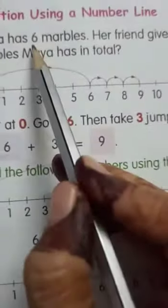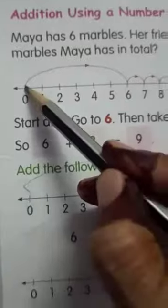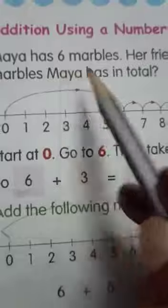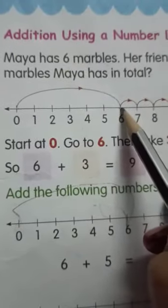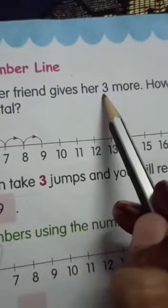Maya was having 6 marbles with her. So, take a jump from 0 to directly to 6. Why? Because Maya was having 6 marbles with her. Next, how many marbles her friend has given? 3.